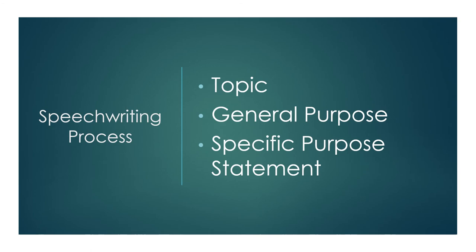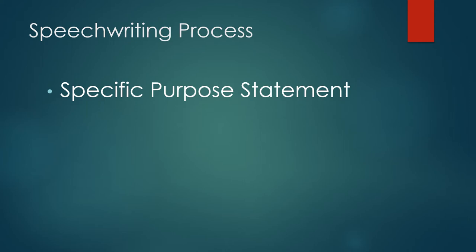After you've decided on the general purpose — whether to inform or to persuade — the next step is to write out what is called a specific purpose statement. This is a statement that makes it clear what the overall goal of your speech is. What do you want the audience to learn? What do you want them to know by the end of the speech? What do you want the audience to do or to believe? By keeping the end in mind, you'll be able to write a more focused speech. It's important to keep the end goal in mind and make the audience your primary consideration.